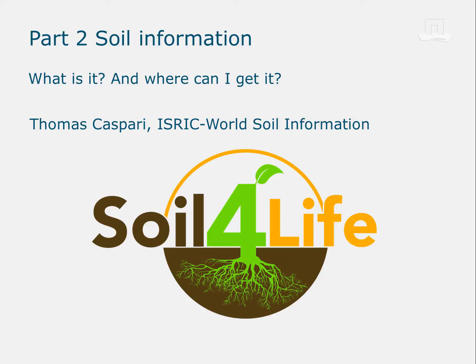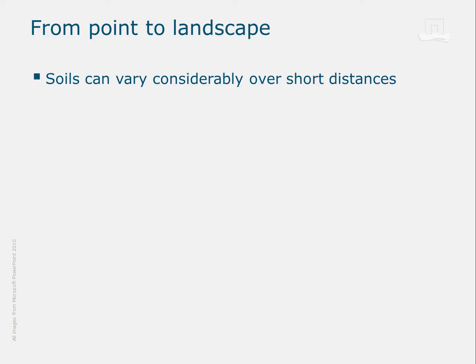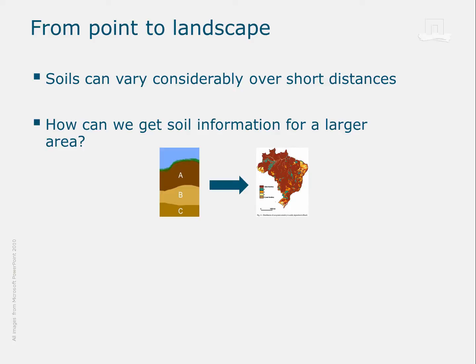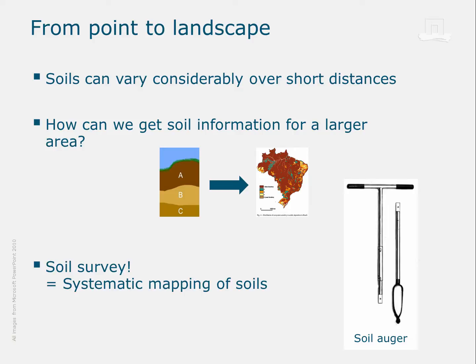I finished part 1 of this topic with a key point and a related question. The point was that soils can vary quite a lot over short distances. And the question was, so how can we possibly get continuous soil information for a larger area and extrapolate from point to landscape level? That's what I'm going to let you see here in part 2 on soil information. To get continuous soil information for a larger area and be able to move from point information to the landscape scale, we use what is called soil survey.